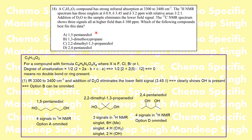Option A can be neglected because in the NMR we should see only three signals. For option C, we are going to see one signal for both OH groups, one signal for both the adjacent methylene groups, and one signal for both the remaining methylene groups — in the ratio 3:2:1. So this is going to be the right answer.